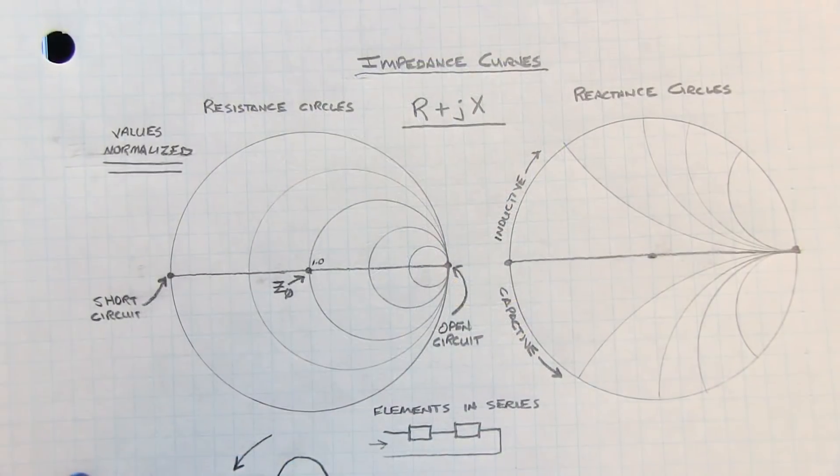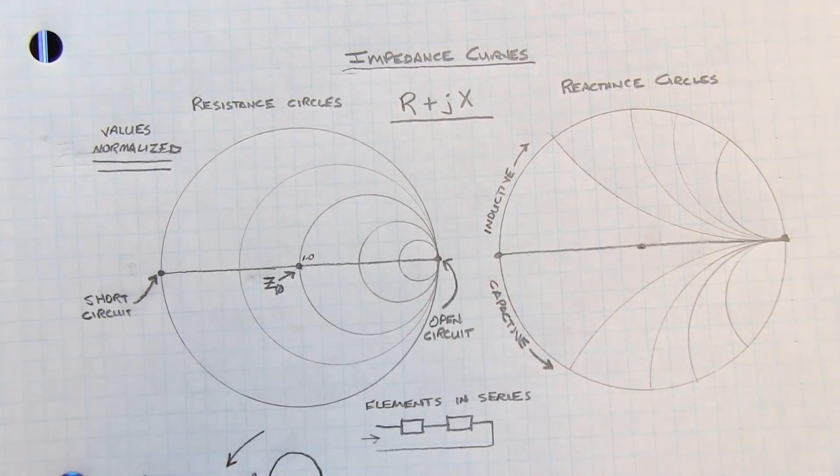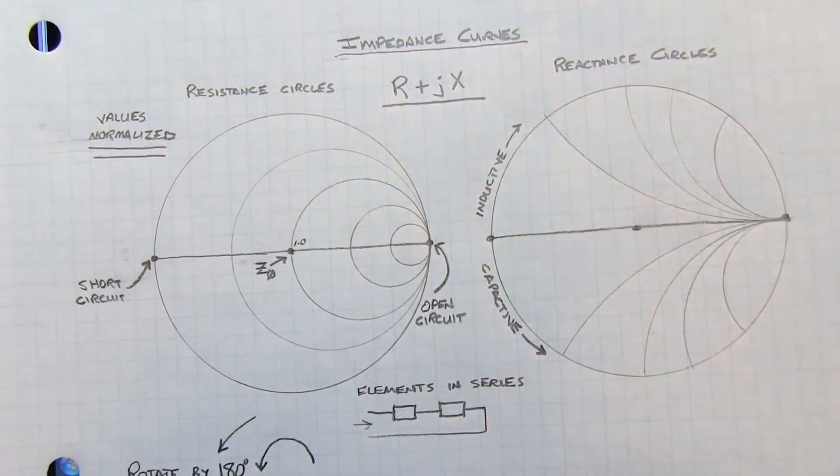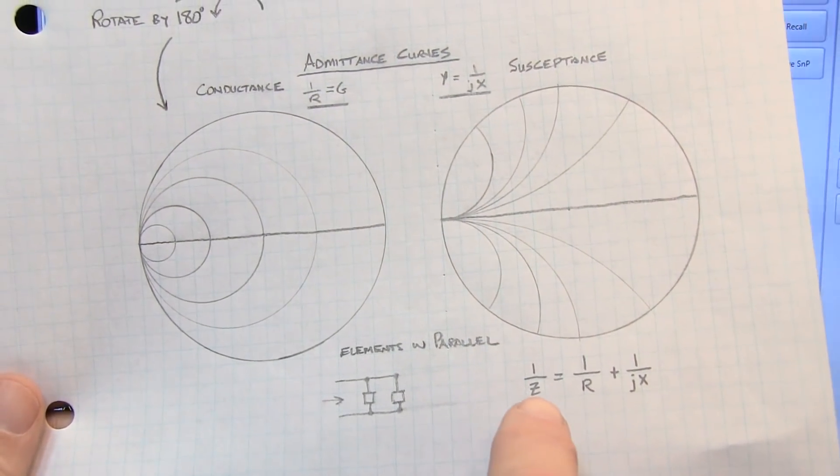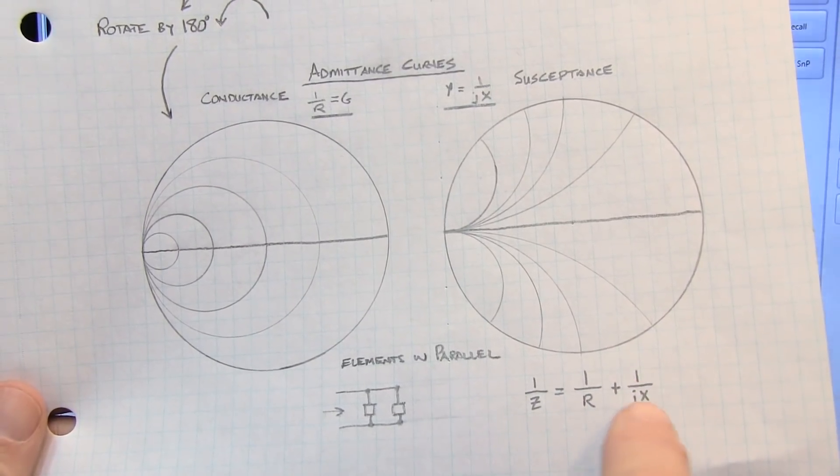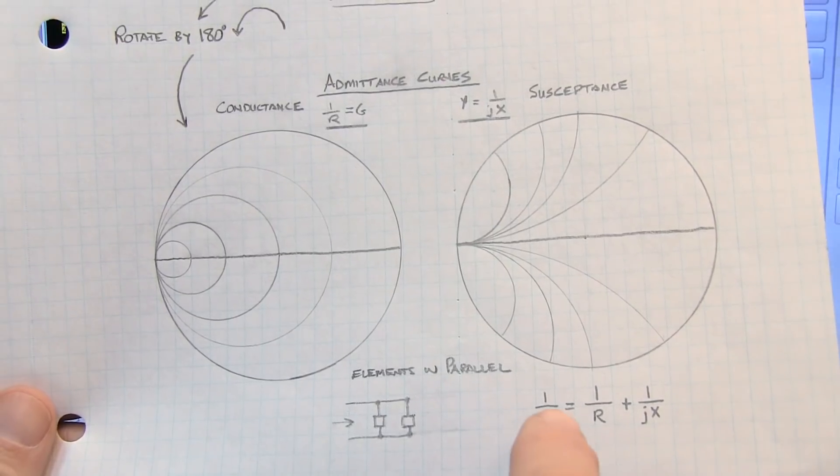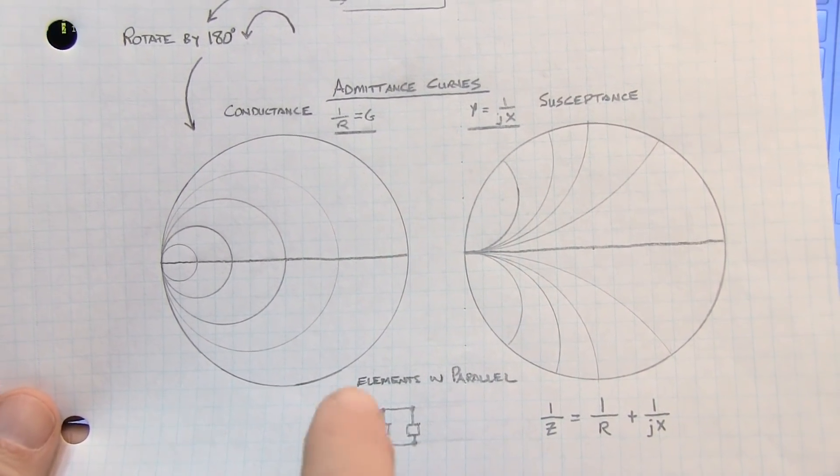When adding these elements in series, you're simply adding the reactive component to the real component. However, if you're going to be adding elements in parallel, it's more convenient to typically talk about admittance, and that's where you're adding the conductance components to the susceptance components, or one over the resistance and one over the reactance. So there's actually a complementary series of curves on the Smith chart called the admittance curves.